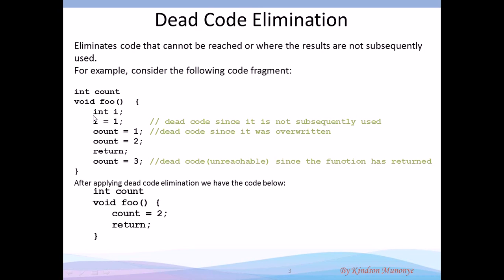So declaring and assigning i is dead code and has to be removed. Then count is assigned a value, and here it is also assigned a value, overwriting the first value assigned — meaning that the first assignment is not used. Then count equal to three is also dead code because the function returns before it gets there. So if we remove all the dead code, the final program becomes what you can see here.